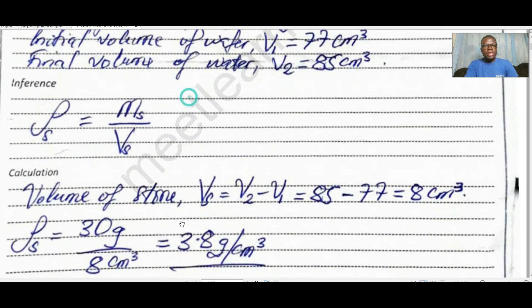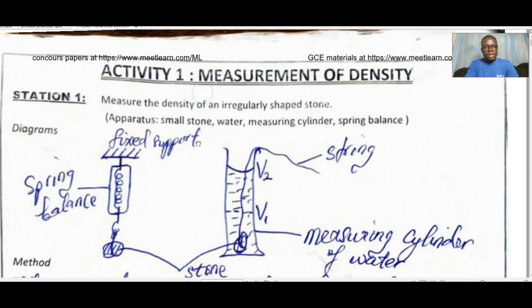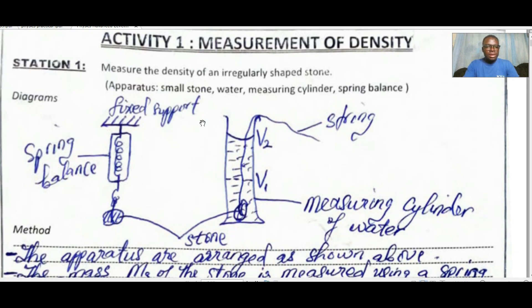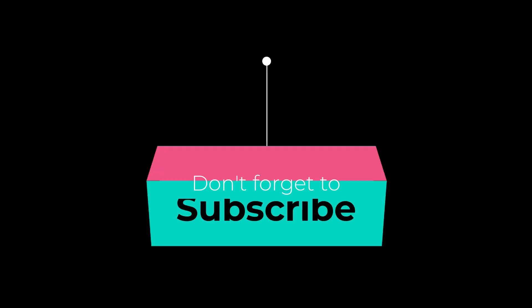That is it for this experiment. Take note that even though this is a station, it can come as a mainstream — the difference will just lie in the number of times you repeat the same process. You might also be asked to plot a sketch or graph and answer questions about properties, find the slope or gradient, and do other calculations. In our next experiment we'll see some of these. Thank you, see you next time.